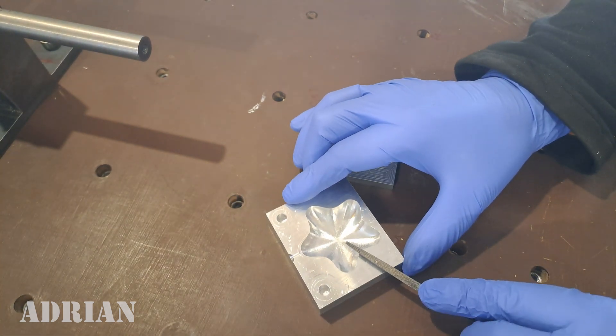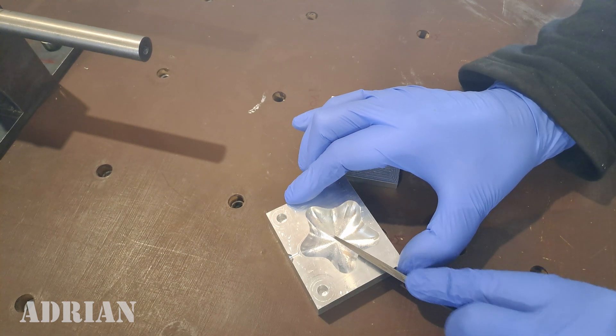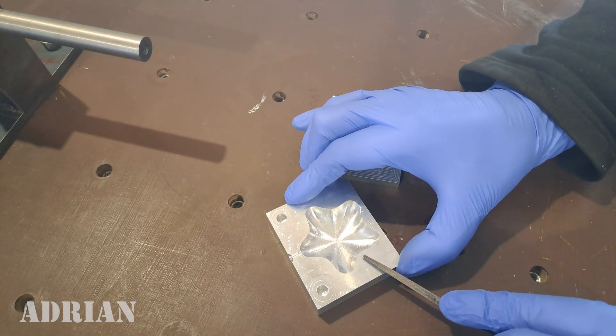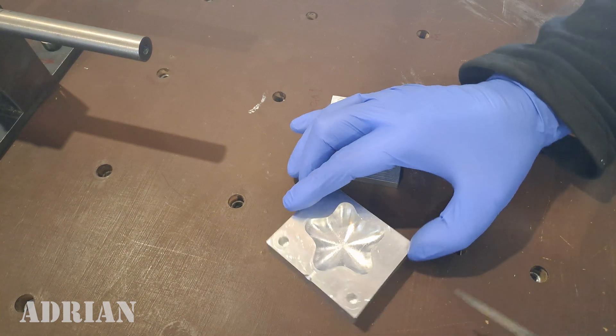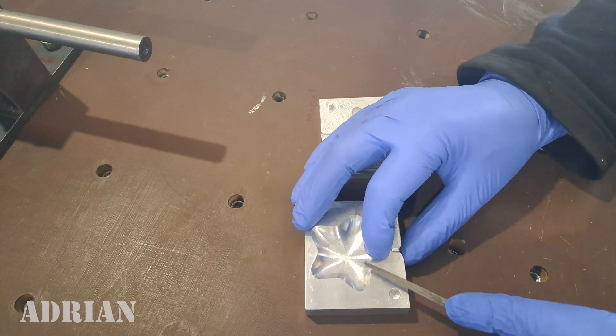First, and very important, I need to make air vents on the mold. I just use a file and gently make small channels where the air can escape from the mold.